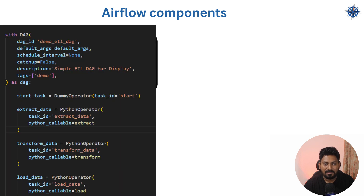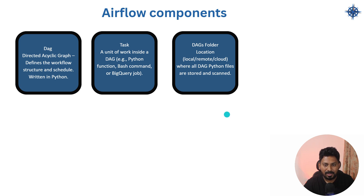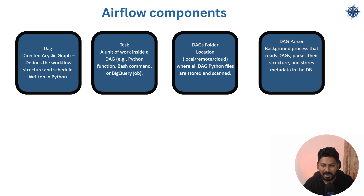Once you've written a Python file with multiple tasks and a DAG, you put it in the DAGs folder. The DAGs folder location changes based on deployment mode — on a VM it's a local folder in Airflow home, on Cloud Composer it's a GCS bucket, on AWS it's an S3 bucket. Airflow continuously scans the DAGs folder; when a new Python file appears, it parses it and makes it visible in the UI.